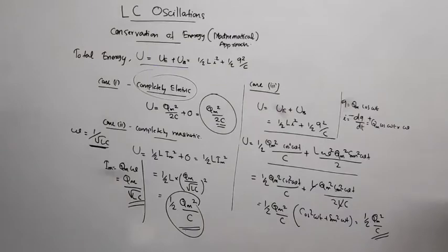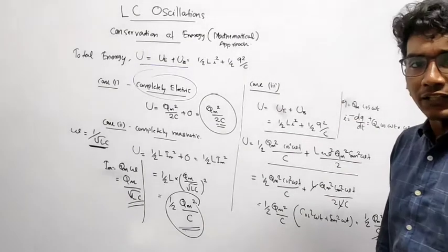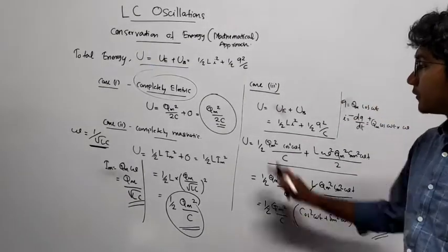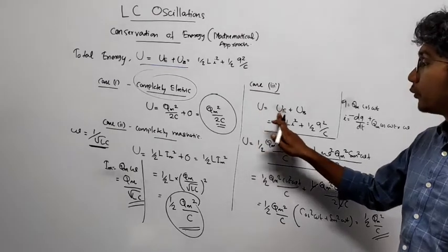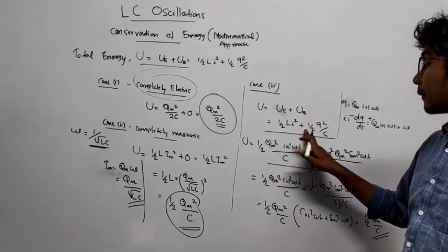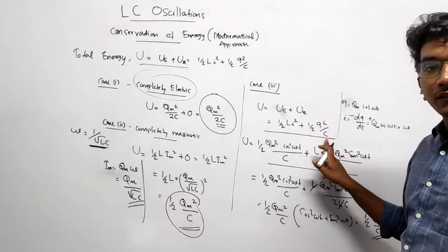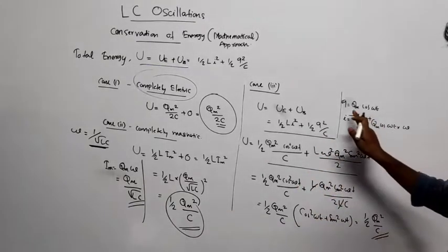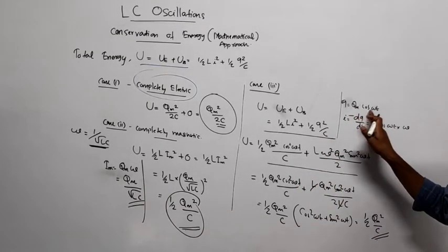Then third one. This needs your attention here, full attention. So U is equal to Ue plus Ub. So that is half LI squared plus half into Q squared by C. And we know that Q is equal to Qm into cosine omega t. That we have seen before.